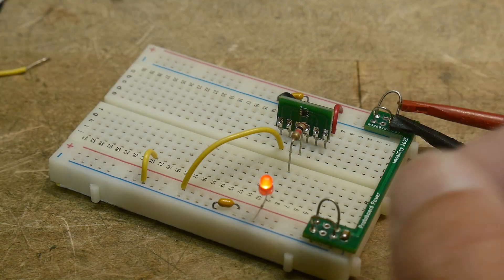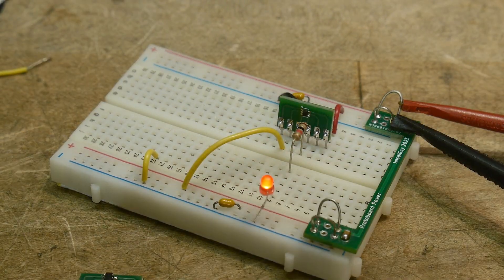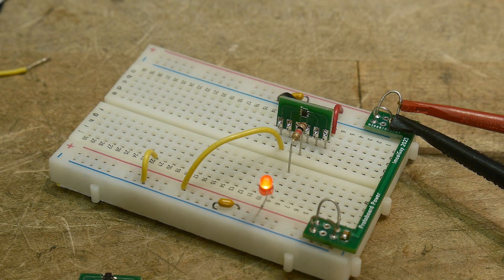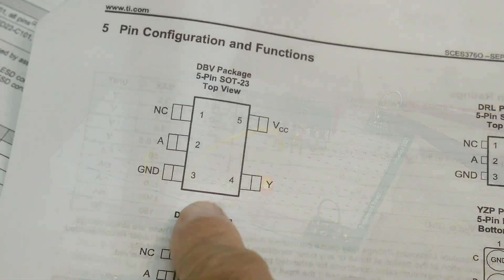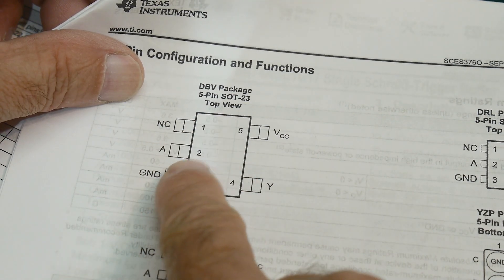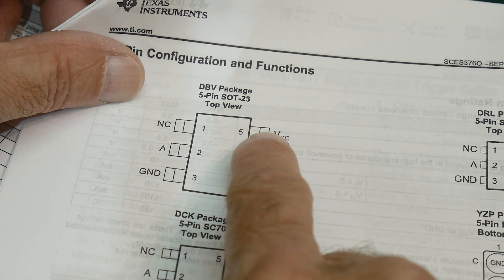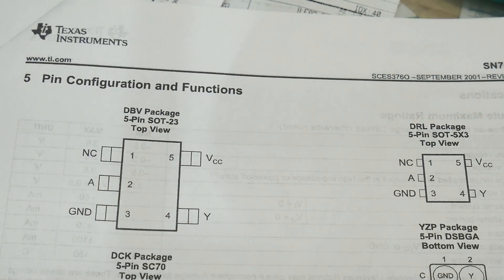Alright, so let's take this one out and replace it with this one. This is the two gate version, so the pinouts are going to be different on these things. Let's take a look at that. Alright, so this is the part I'm currently using. It has a no connect on one, the input's on two, the output's on four, and then VCC and ground.